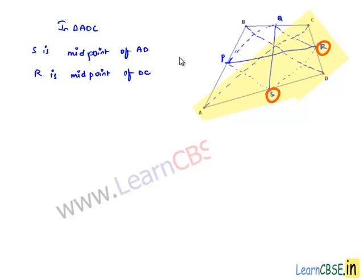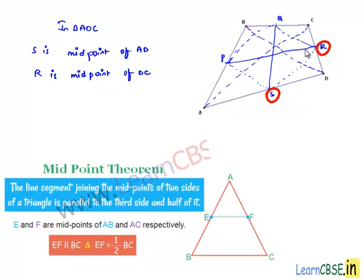Since S is the midpoint of AD and R is the midpoint of DC, by the midpoint theorem, SR is parallel to AC and SR equals half of AC. Let this be the second statement.